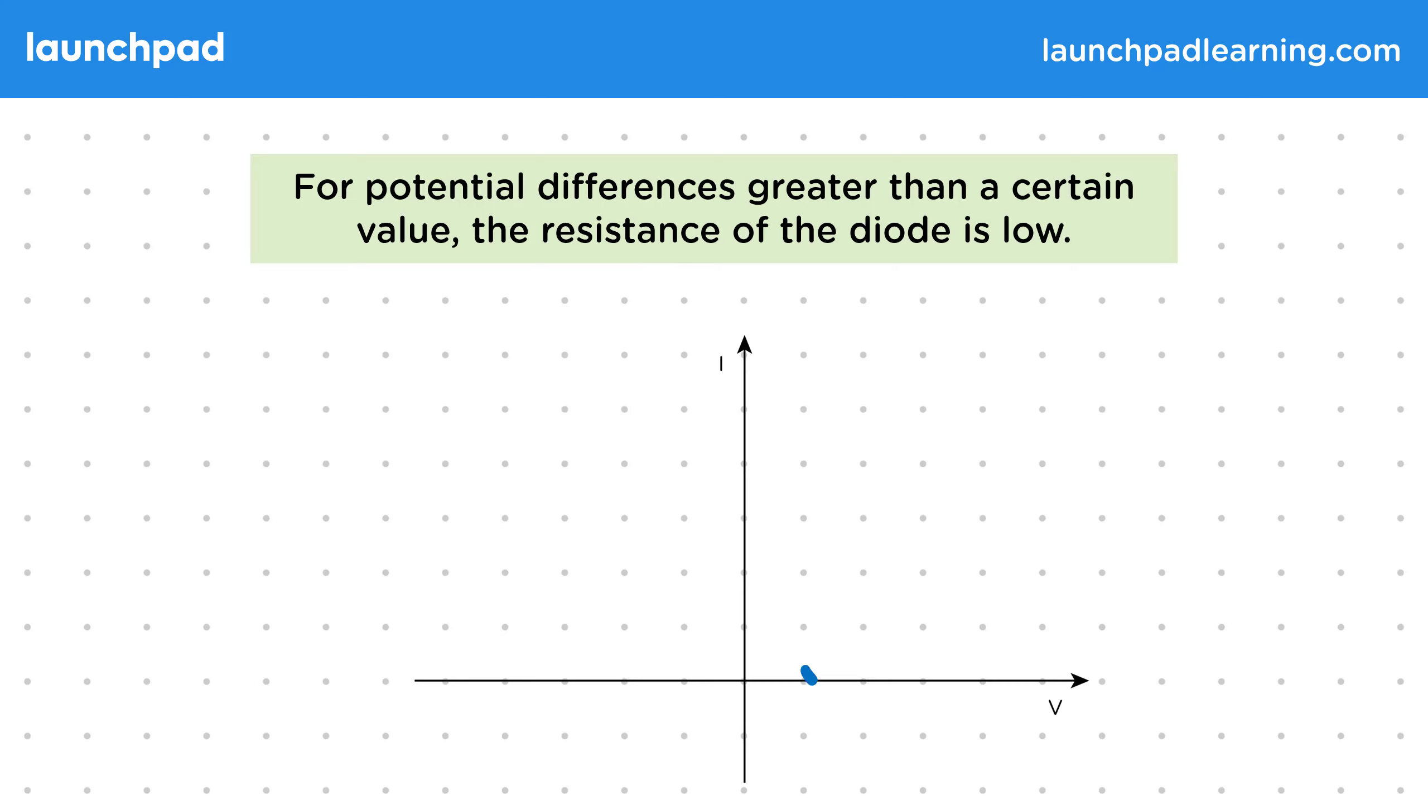We can mark it here on the horizontal axis of an IV graph. Remember that this graph will show us the relation between the current and potential difference for the component.